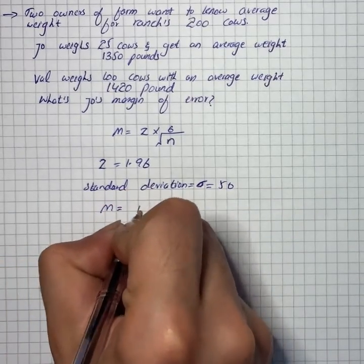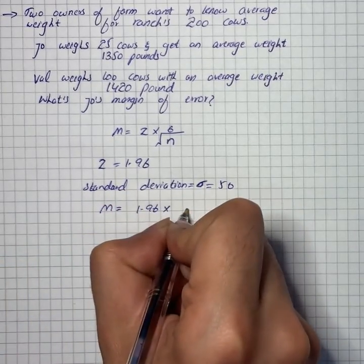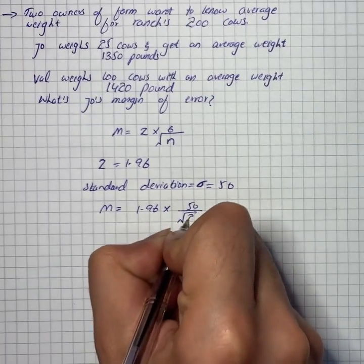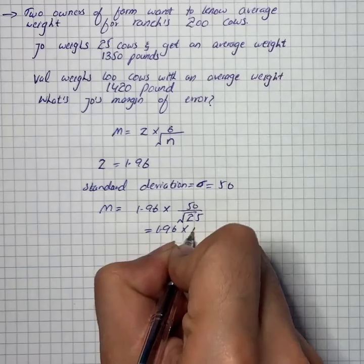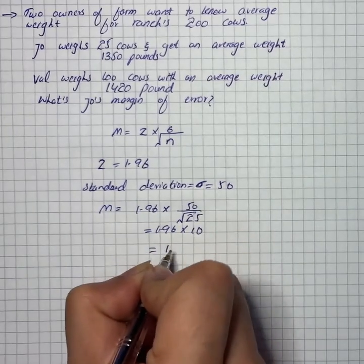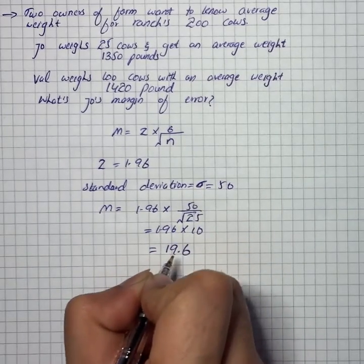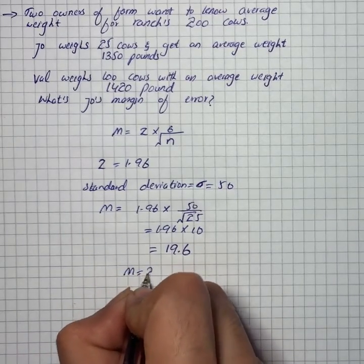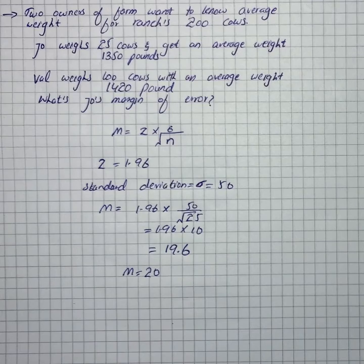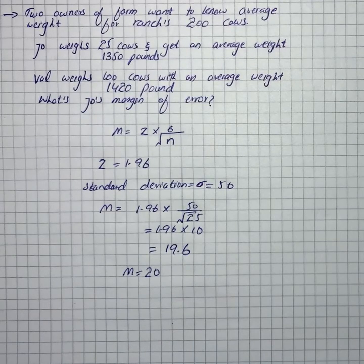We have m equals 1.96 multiplied by 50 divided by the square root of 25, that is 1.96 multiplied by 10, which equals 19.6. Rounding to the nearest whole number, we get m equals 20. So Joe's margin of error is 20, rounded to the nearest whole number.